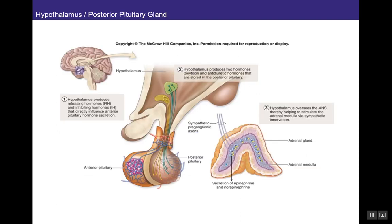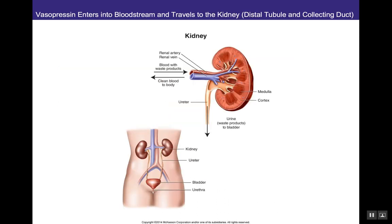After those osmoreceptors detect high osmolarity in the blood, vasopressin is produced in the hypothalamus and transported along axons of neurosecretory cells into the posterior pituitary, where it is released into the blood. From the posterior pituitary, vasopressin travels through the circulatory system to the kidney, where its receptors are on the epithelial cells lining the distal tubule and collecting ducts.